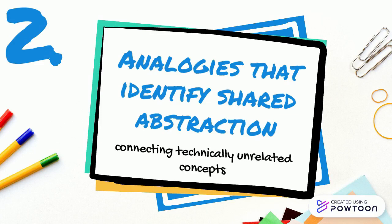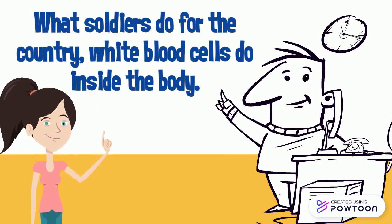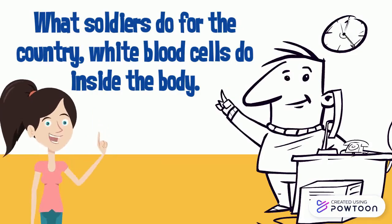The second form of analogy compares two things or concepts that are technically unrelated in order to establish a connection between a characteristic that they share. This type is common and useful in writing because it can make abstract ideas and concepts more concrete. For example: what soldiers do for the country, white blood cells do inside the body. The abstract concept of how white blood cells function is made clear by explaining that they protect everything inside, like how soldiers perform their sworn duty to protect their country.